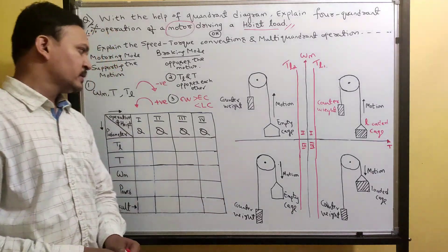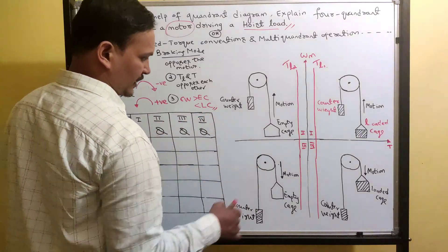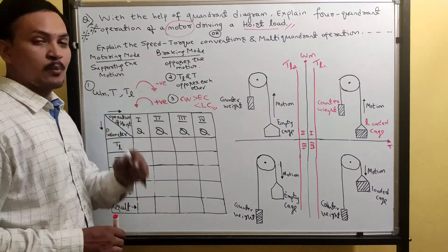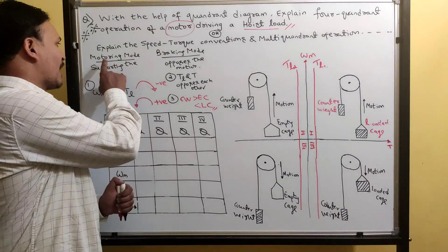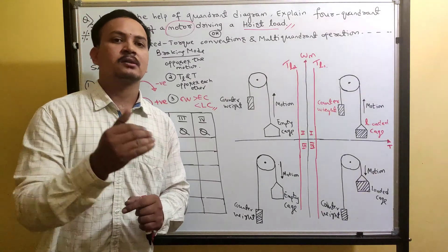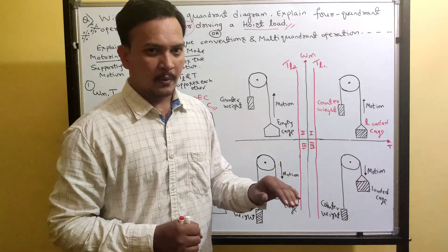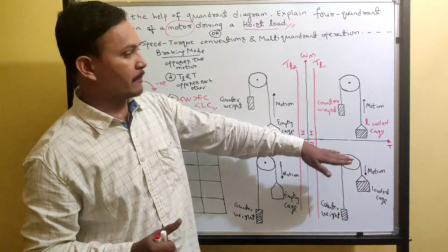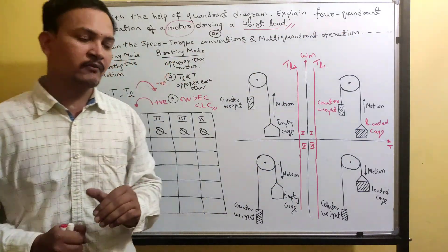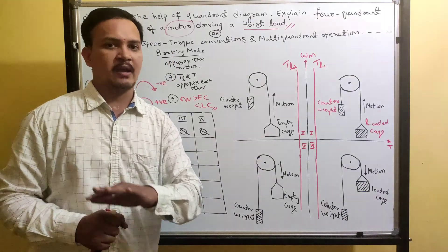With all these assumptions, let's start the entire operation to determine which quadrant is motoring mode and which is braking mode. Forward direction means the cage is moving from bottom to top. Reverse direction means the cage is moving from top to bottom.